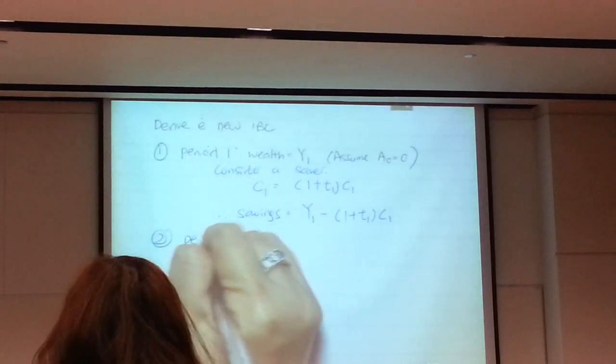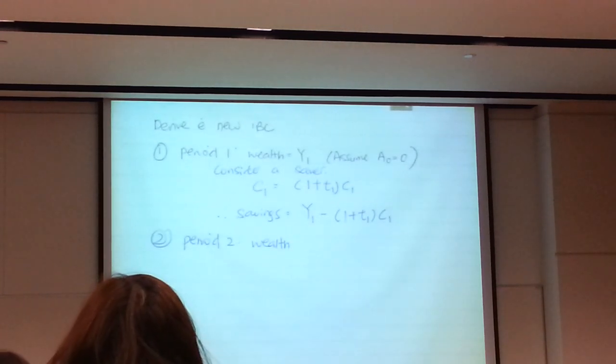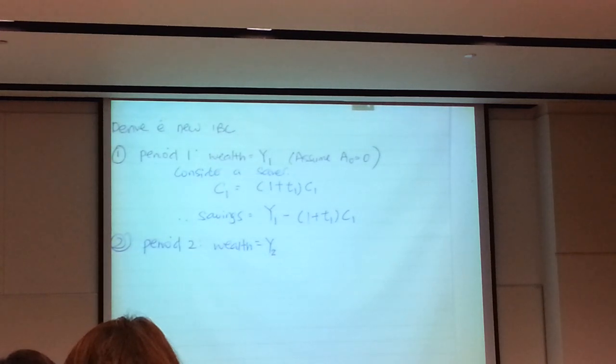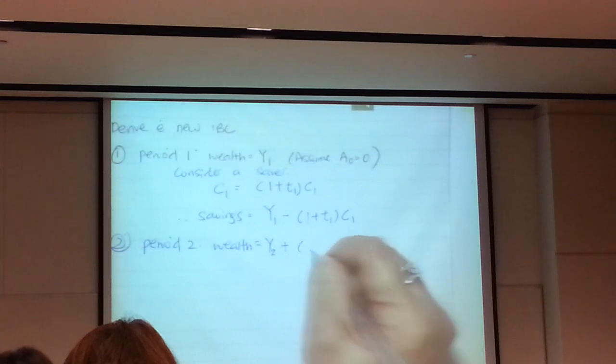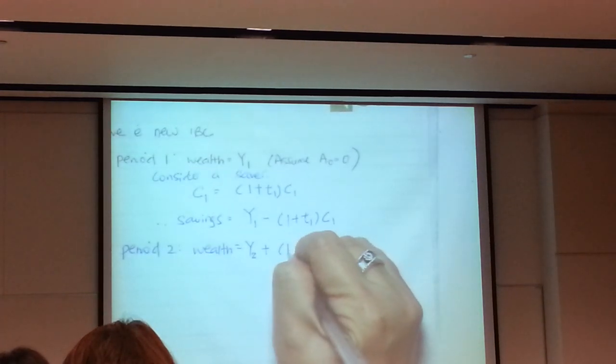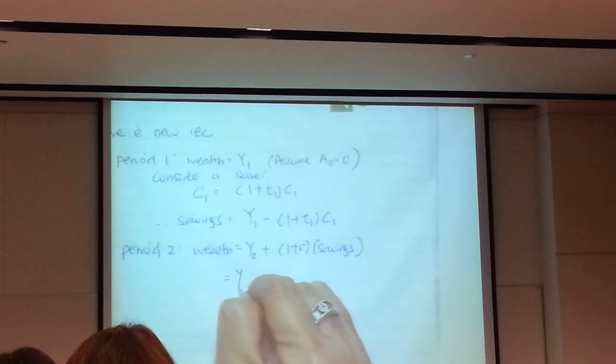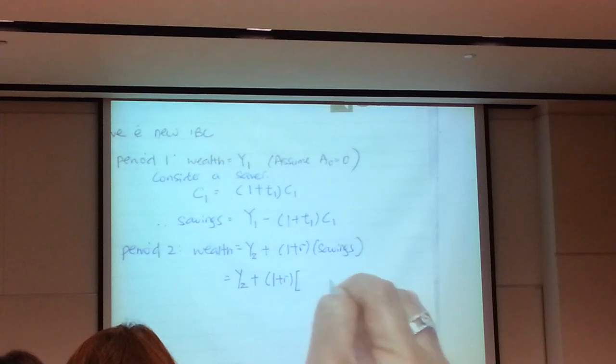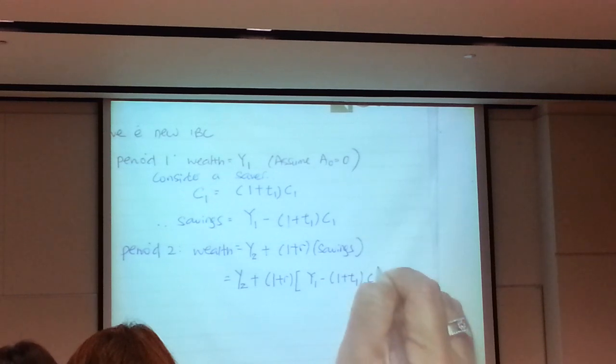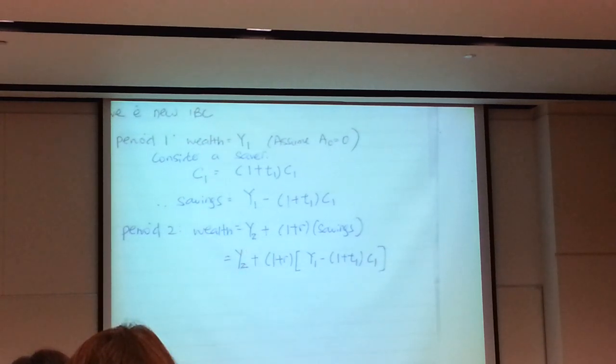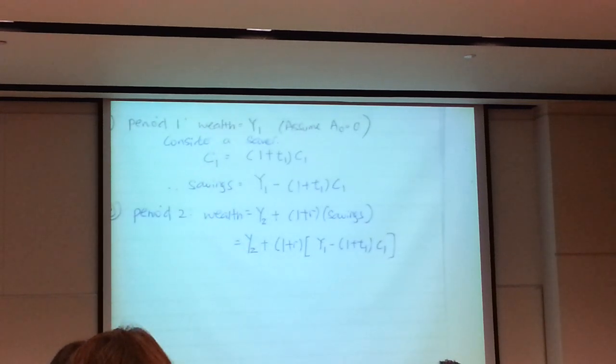So this is the same approach which I used in the lecture notes. How to derive IBC? We look at a person who saved. We look at his decision in period 1. He earns Y1, he spends C1. So the balance, he saves. Except now, C1 will be written in a more complex manner, 1 plus T1, C1. Then we go to period 2.